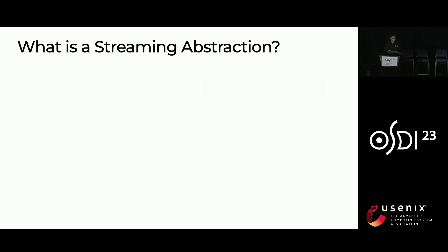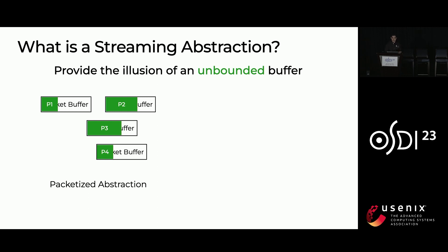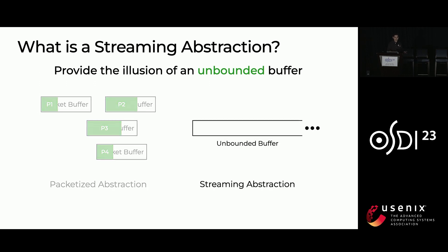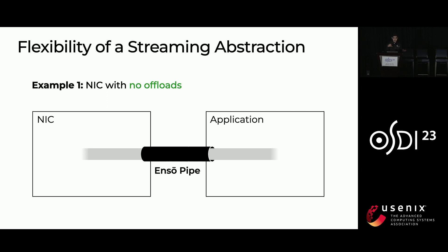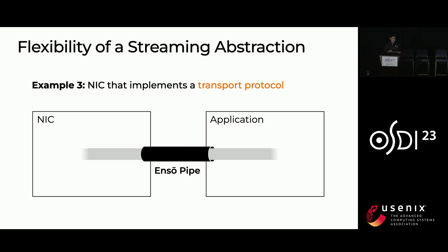What we mean by stream abstraction is that we provide the illusion of an unbounded buffer. Instead of having per-packet buffers as in the packetized abstraction, a stream abstraction gives you the illusion of an unbounded buffer. The NIC and the CPU can transmit data among themselves by appending data to this unbounded buffer. This is extremely flexible: even if your NIC has no offloads, you can still use the ANSO pipe to deliver raw packets to the application. If your NIC is aware of application-level messages, it can enqueue these large messages continuously in the ANSO pipe. And of course, if your NIC implements a transfer protocol such as TCP, we can communicate a byte stream using the ANSO pipe.